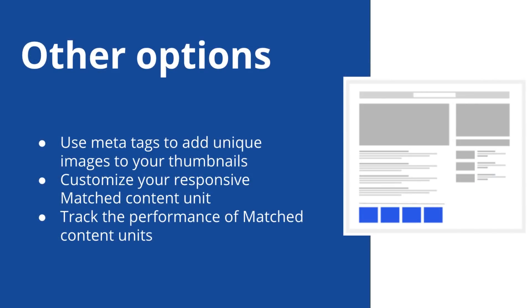Sometimes, you may not be able to see images or thumbnails in your matched content. In such cases, you can try to add a unique image to as many articles as possible. Using a meta tag will also make it easier for our system to crawl for images. Additionally, you're also able to customize your responsive matched content units and track their performance.